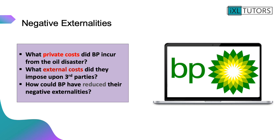A real-world example of negative externalities is the BP oil disaster. Research the BP oil disaster and brainstorm: the private costs BP incurred — increases in costs, cleanup payments, and government fines; and the external costs imposed on third parties — anyone who was not BP or the consumer. Finally, how could BP have reduced their negative externalities? How could the oil spill have been less severe? Pause the video here.